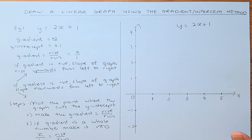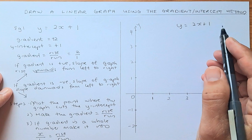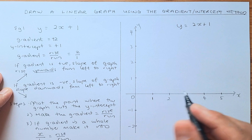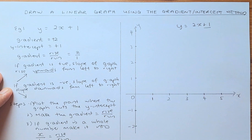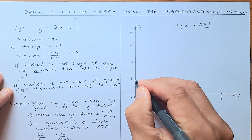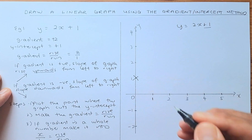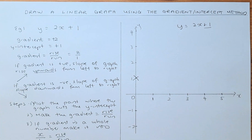Now we'll do the steps and see how fast we can do it — maybe in less than 10 seconds. For y equals 2x plus 1, the first thing you need to do is find the y-intercept. The y-intercept is plus 1, so you look at the y-axis and it's going to cut at 1. That's the first point.